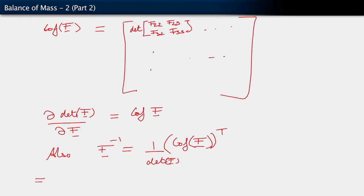So what we see now, using these two results, what we see is that the derivative of the determinant of f with respect to f is the determinant of f itself, a scalar, multiplying f inverse transpose.